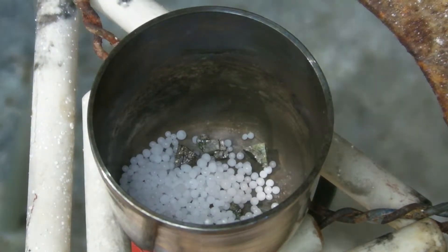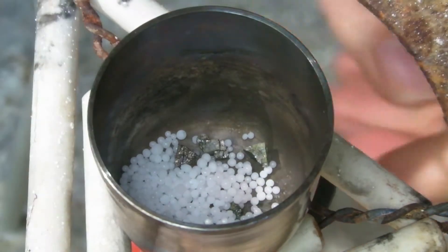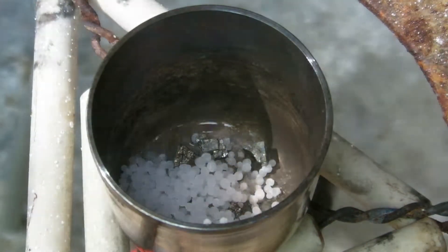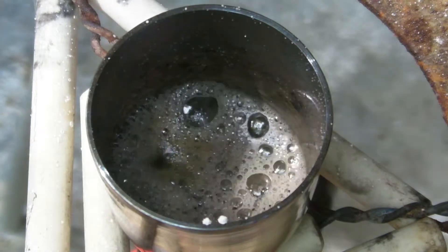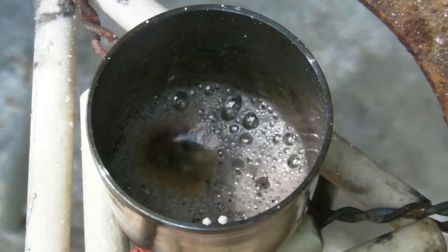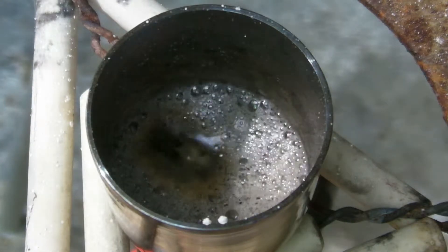Now the crucible is heated with a Bunsen burner. At the beginning, the mixture foams a lot because water evaporates from the sodium hydroxide. This is why the scale of the reaction should be adapted to the size of the crucible.